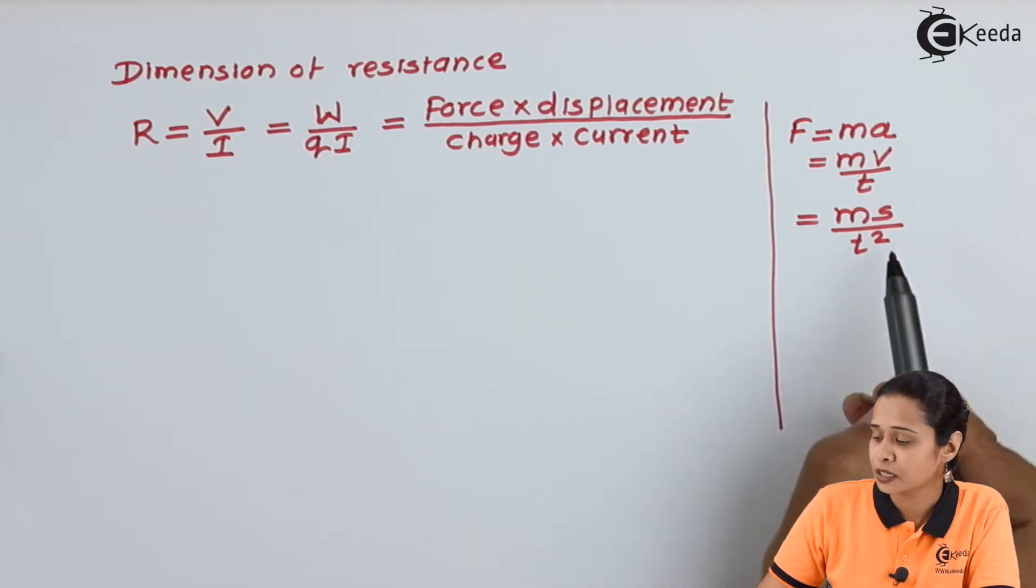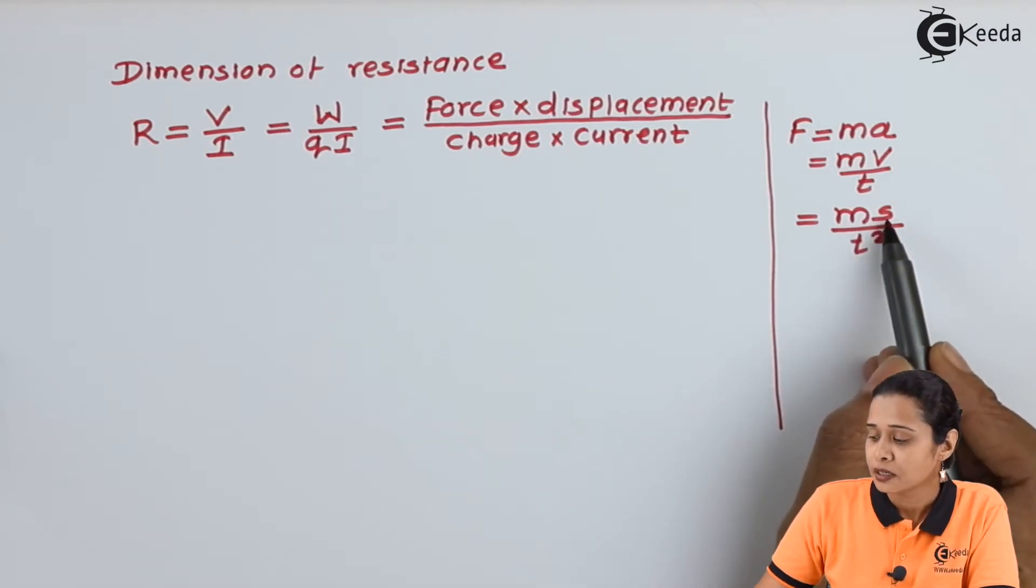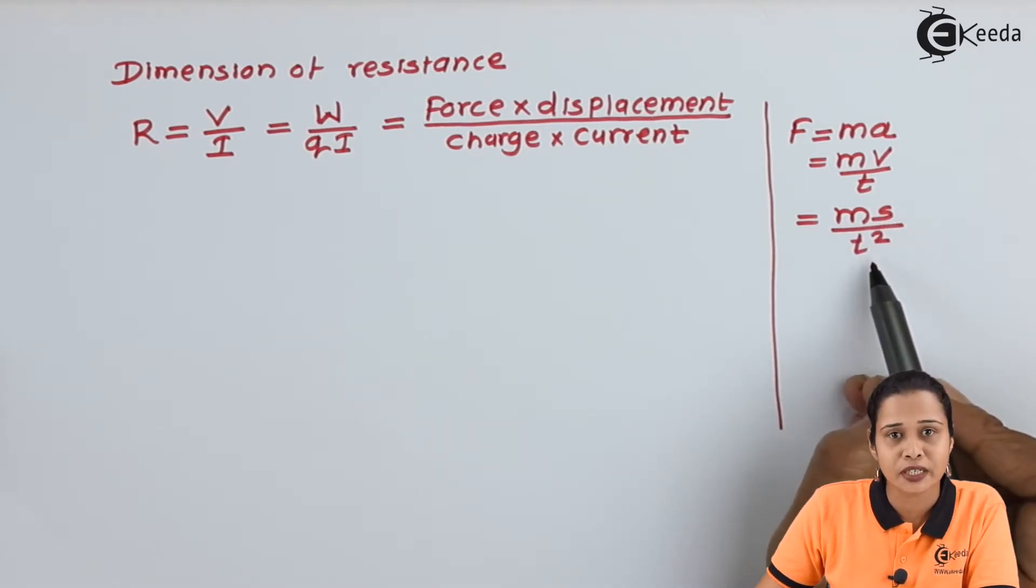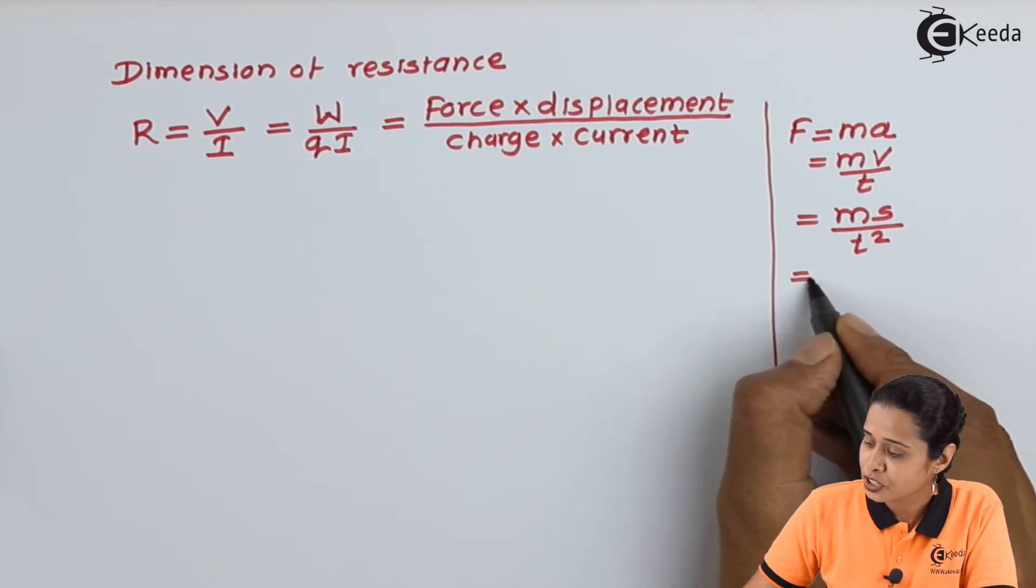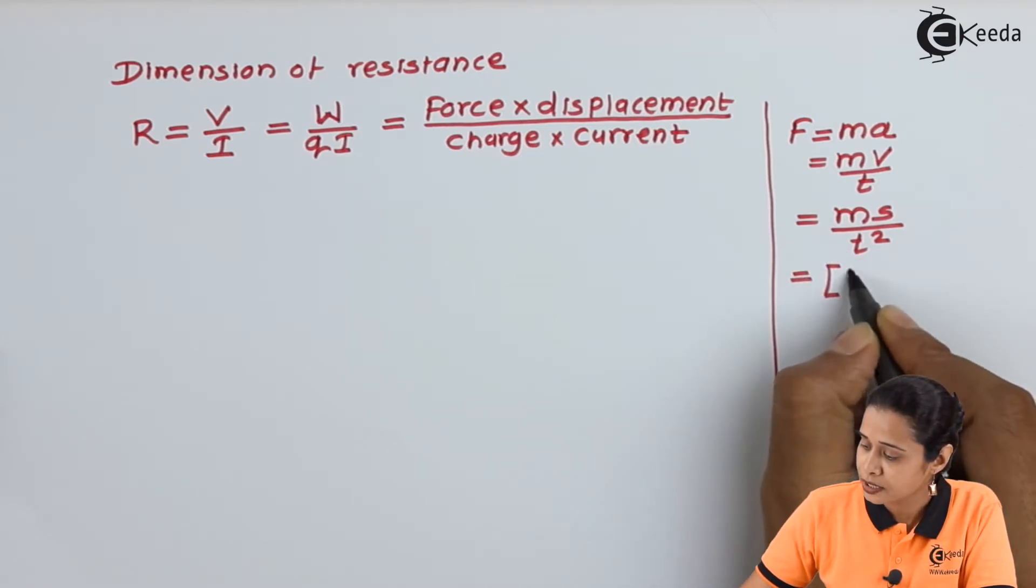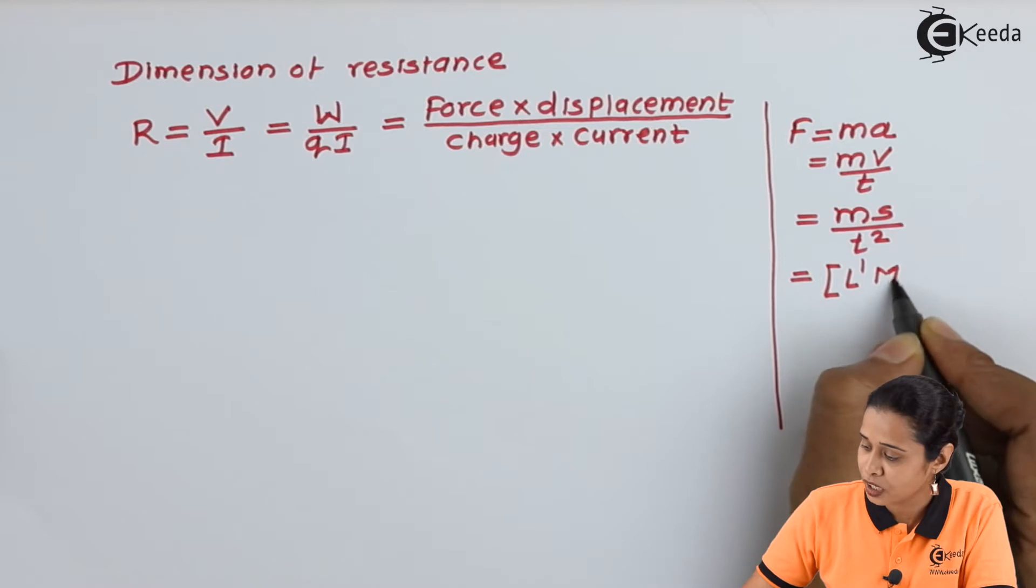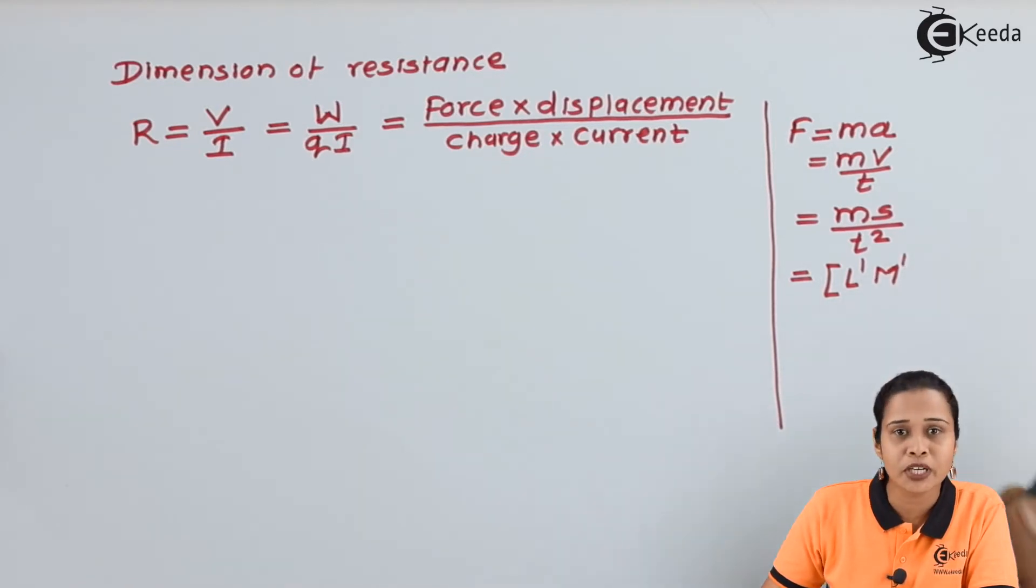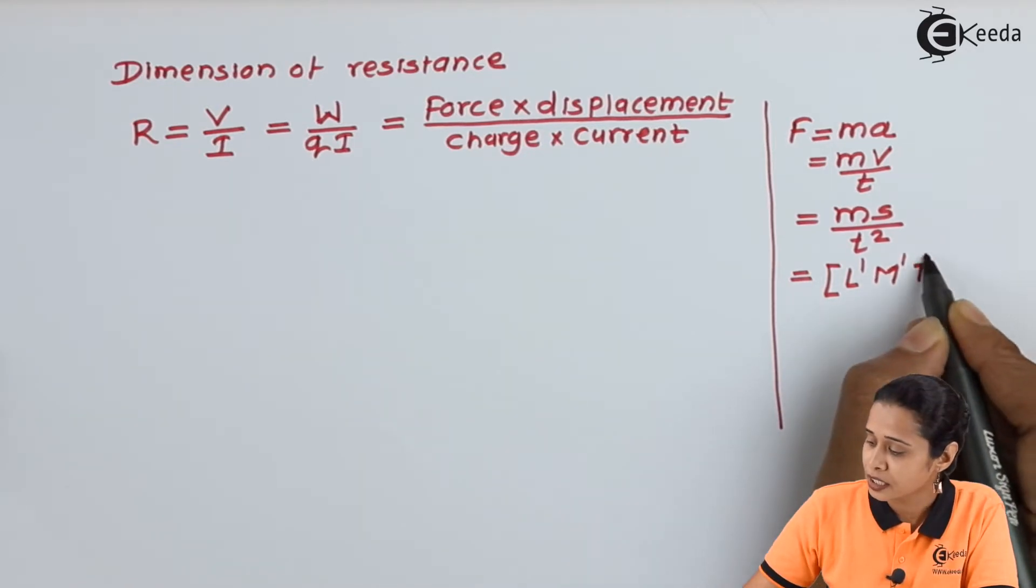Hence, force is mass times length upon T squared, or time squared. So, the dimension of force can be written as L¹M¹T⁻².